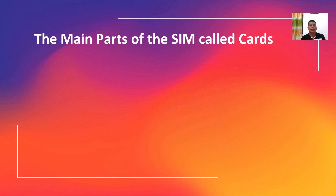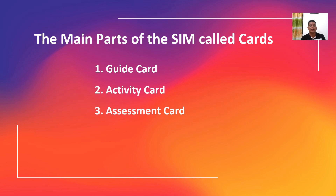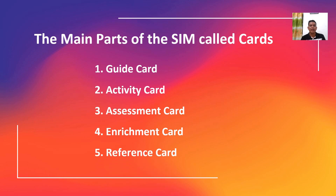What are the parts of the SIM? Parts of the SIM are also called cards. There are five parts: the guide card, the activity card, the assessment card, the enrichment card, and the reference card. Some additional parts we can also include in our SIM are the title card, table of contents, and the answer card.